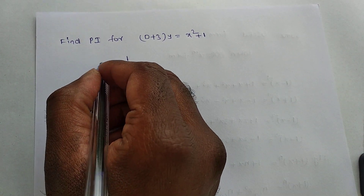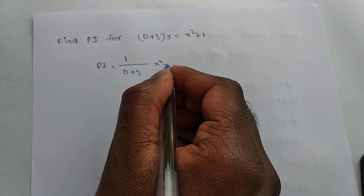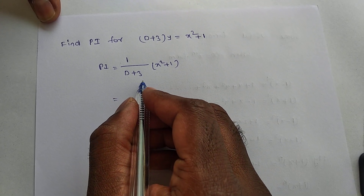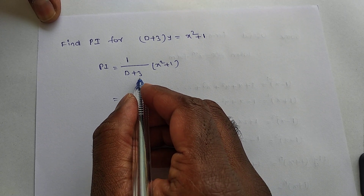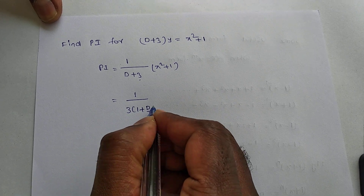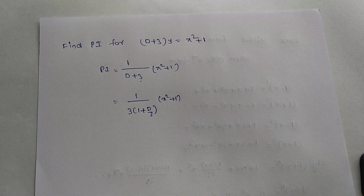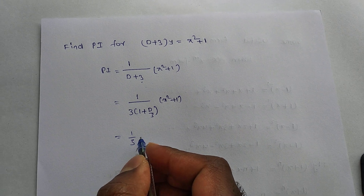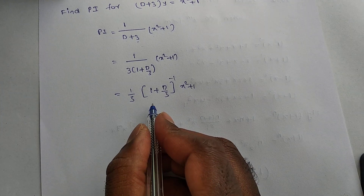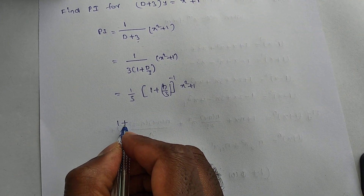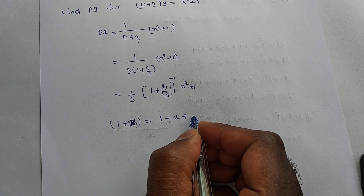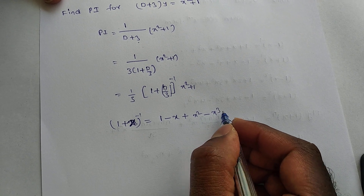Worked Example 1: PI = 1/(D+3) · (x²+1). Q(x) = x²+1, so write f(D) in terms of 1 ± φ(D). The lowest degree term in (D+3) is 3, so take 3 as common: (1/3)·[1 + D/3]^(-1) · (x²+1). This is the (1+D) type, so using the binomial formula (1+x)^(-1) = 1 - x + x² - x³ + ...